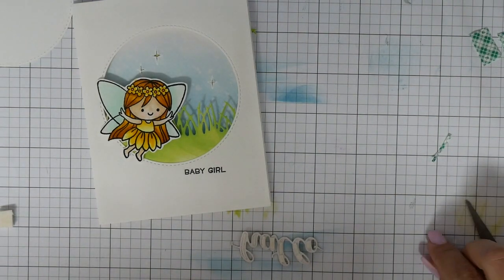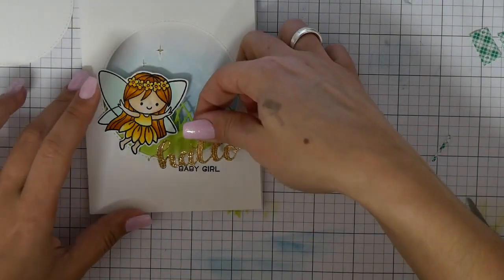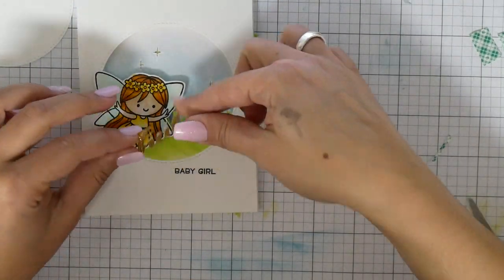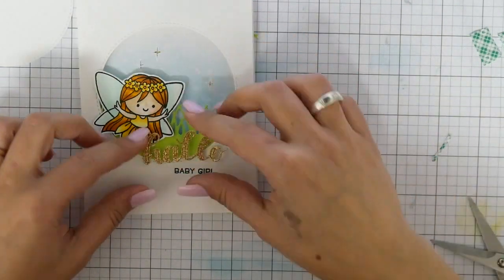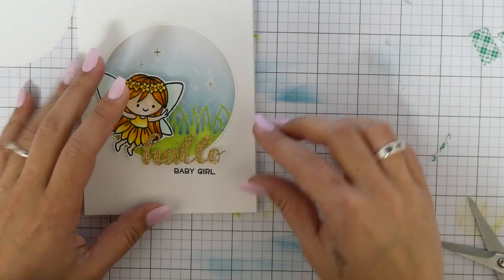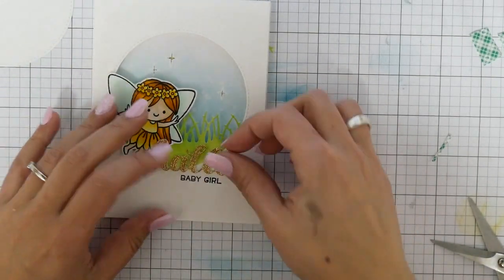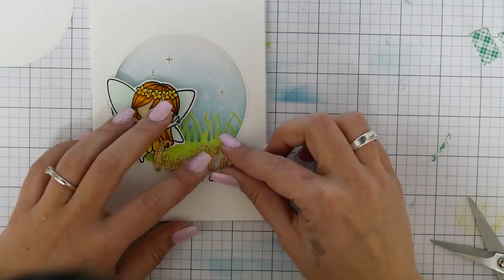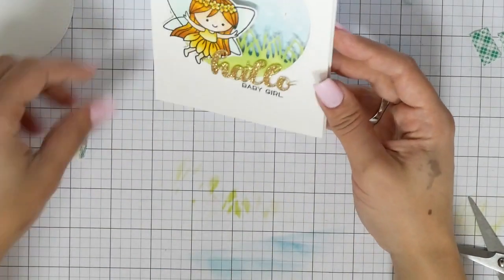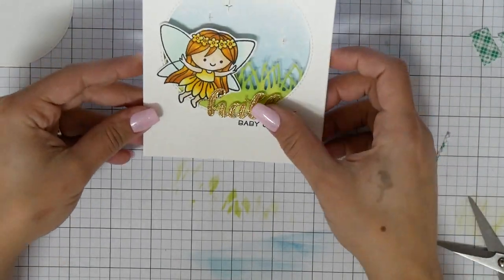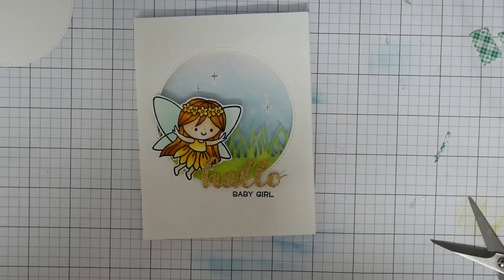My glitter sentiment I planned to tape just straight on top of everything, but the idea of foam tape on the fairy came later. Now I had to use a little bit of foam tape behind the hello die cut as well to have everything even.